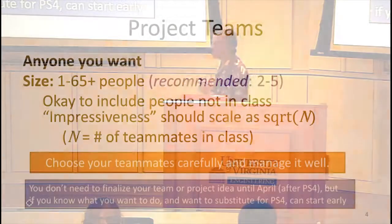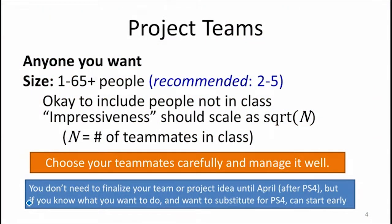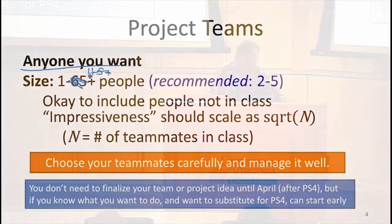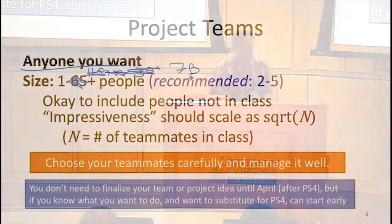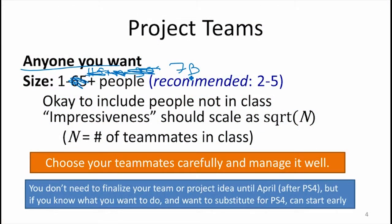The team size for a project can be anywhere up to the entire class — actually bigger, because you can have people outside the class on your team. They're not getting a grade, so there's actually no maximum size. It's only people, so I guess about 300... actually, they don't have to be Americans, so it's about 7 billion. The impressiveness of your project should scale with the number of people in the class on your team. It doesn't have to scale linearly, but should at least scale as the square root of the size of your team.